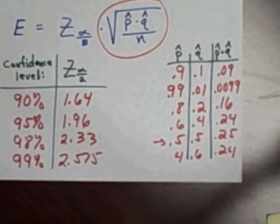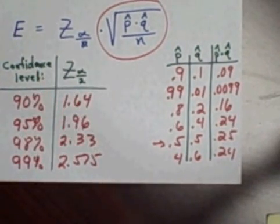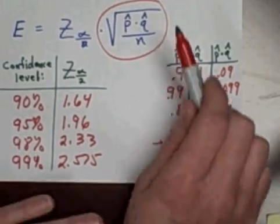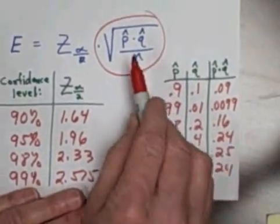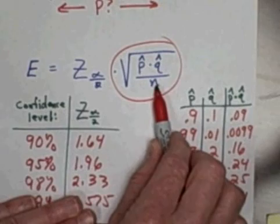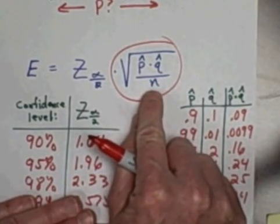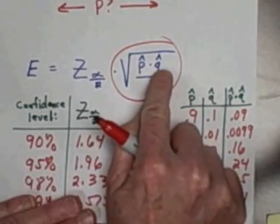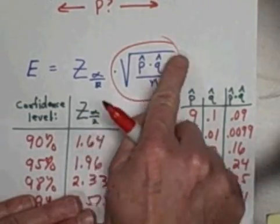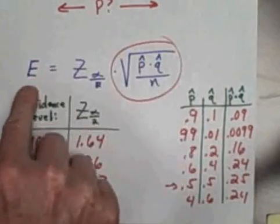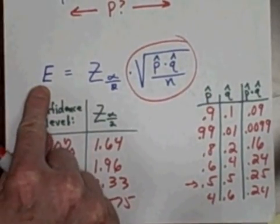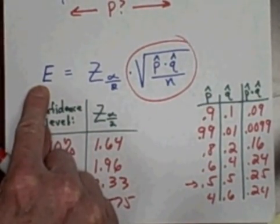But, is that the biggest possible thing that affects my margin of error? And I claim, no, look at this, n is my sample size. And since it's in the denominator, as my sample size gets bigger, that makes this fraction get smaller. Therefore, the square root is smaller. Therefore, it makes my e-value, my margin of error, smaller.